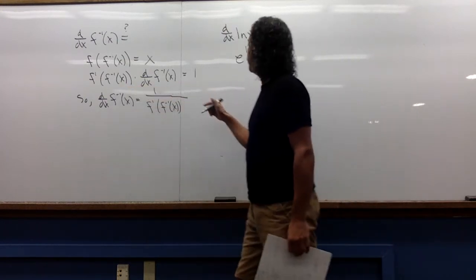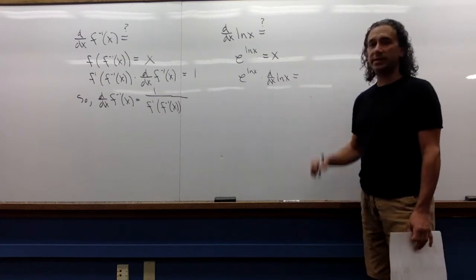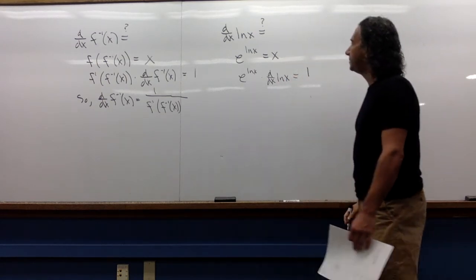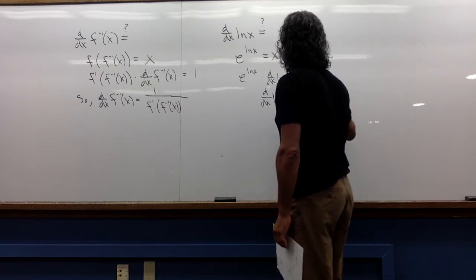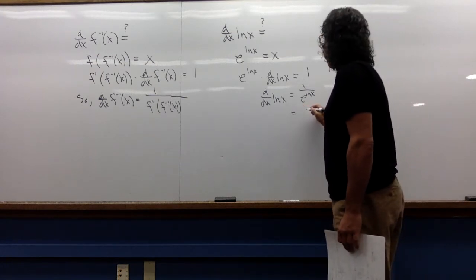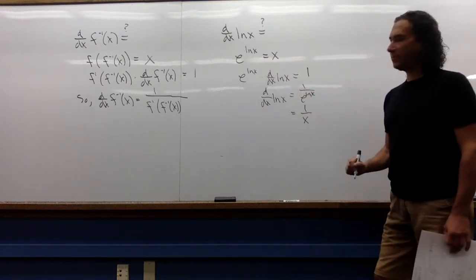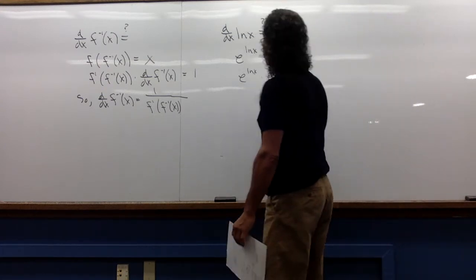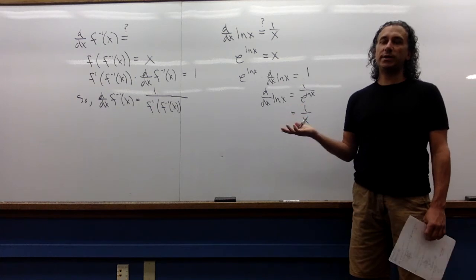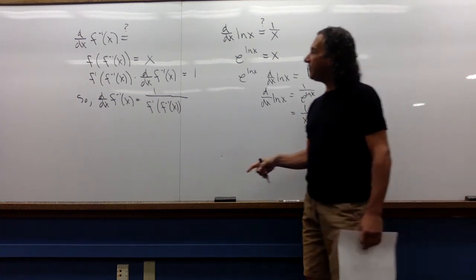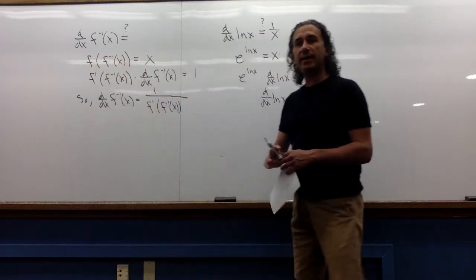So how do we do it? We just take the derivative of both sides. We have e to the ln of x times the derivative of ln of x — again, that's the chain rule — and this is what I'm trying to solve for. The derivative of x is 1. So the derivative of ln of x is 1 over e to the ln of x. We never write it like this, though, because e to the ln of x is just x. So we get that the derivative of the natural log is 1 over x.